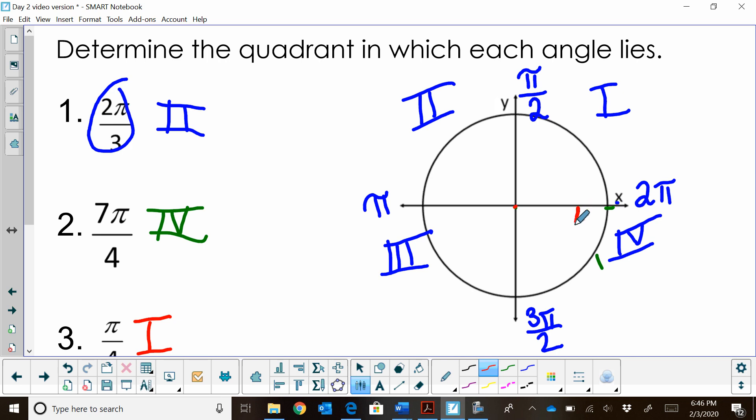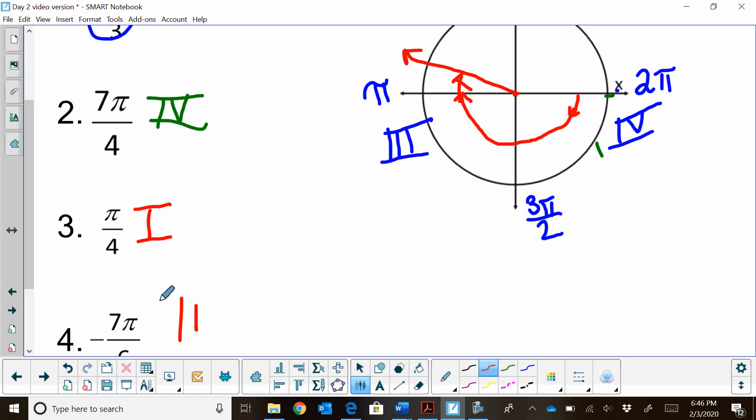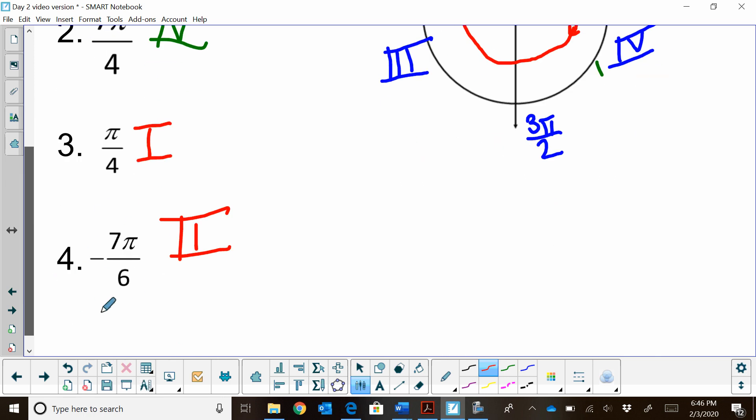So I'm going negative. So I know I'm going this direction. And I just go to seven pi six. Well, six pi six would bring me to here. And then I'm going another pi six. So that's seven pi six. So my terminal side will actually end up in quadrant two. And that's how you figure out your direction with a positive and negative, and then where the terminal side ends.